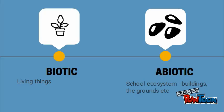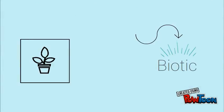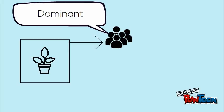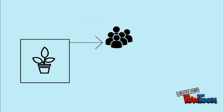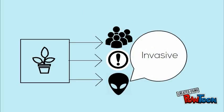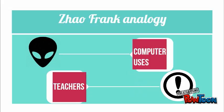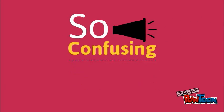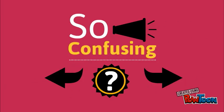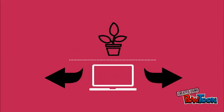The biotic components are the living parts of the ecosystem. Each species also has a role or niche to play. Biotic species can be subcategorized as dominant species — species that do not vary much in type but have large numbers; keystone species — species that are not dominant but very important to the ecosystem's continuation; and invasive species — species that are not native to an ecosystem. In the Zhao and Frank analogy, the keystone species are teachers and the invasive species are computer uses. Though computer uses are not biotic in nature, since they evolve similarly to living species — where diversity leads to the development of superior species and discarding of inferior models — they are considered biotic for the analogy.